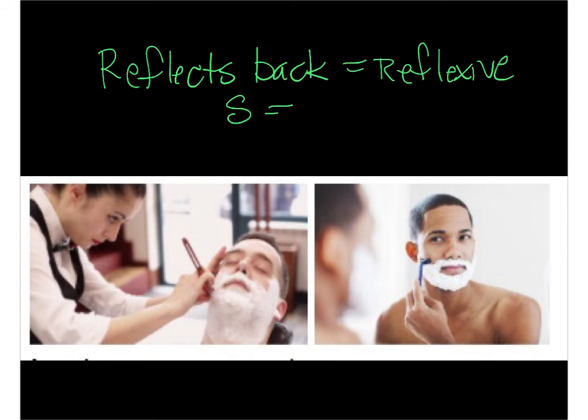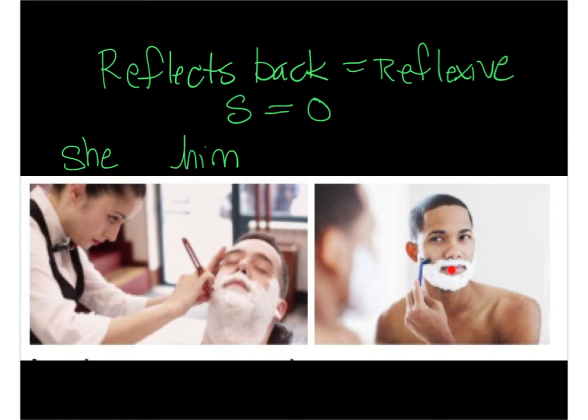What ends up happening is that the subject and the object are the same person. So if we look at our pictures here, we have two examples of to shave. This is an example of not reflexive — she shaves him. However, on the picture on the right, he is the subject, he's the shaver, but he's also the object — he's receiving the shave.